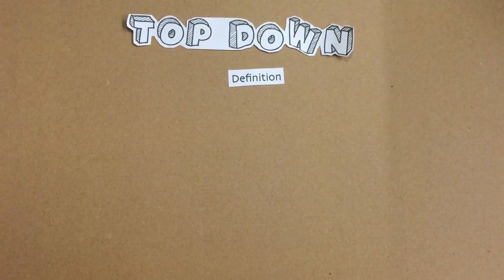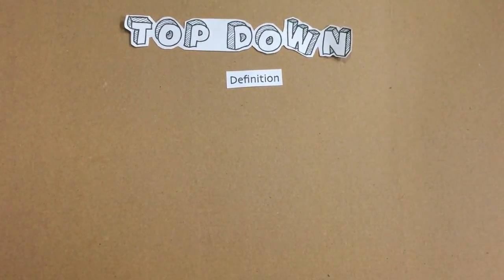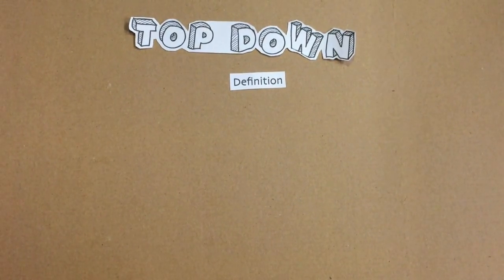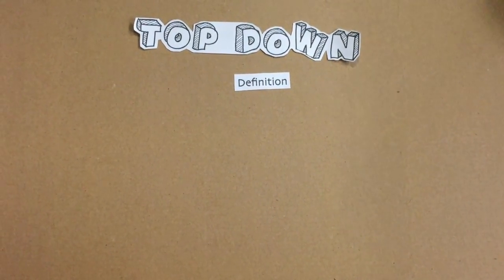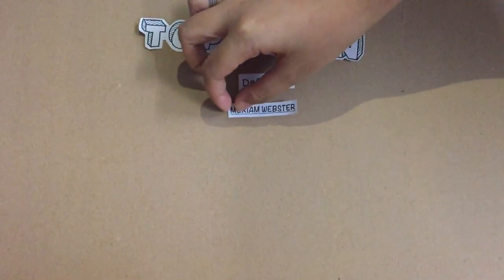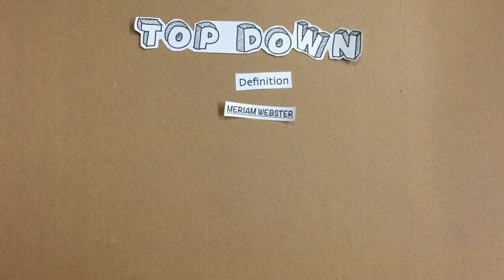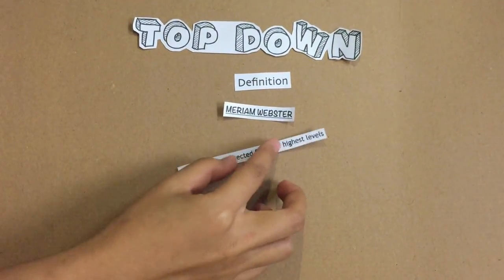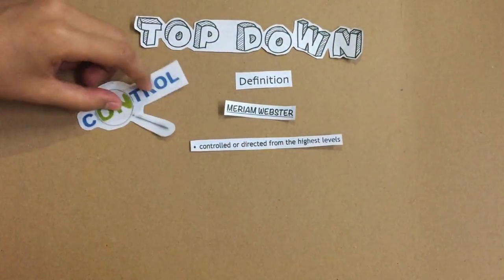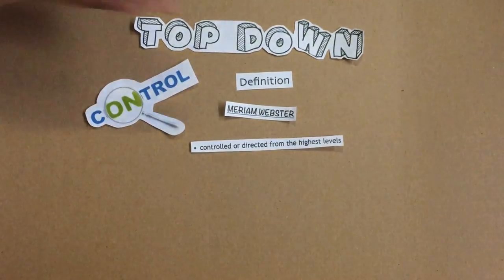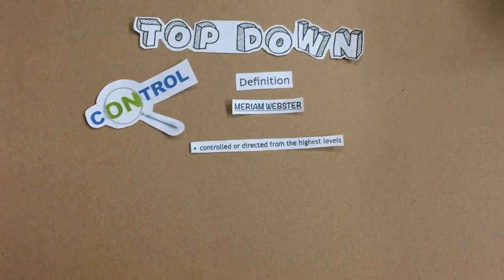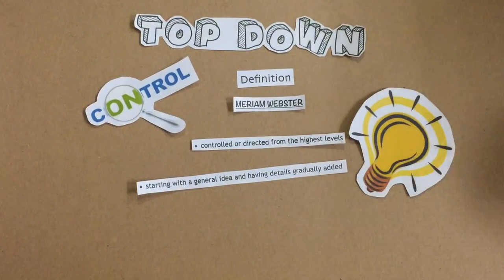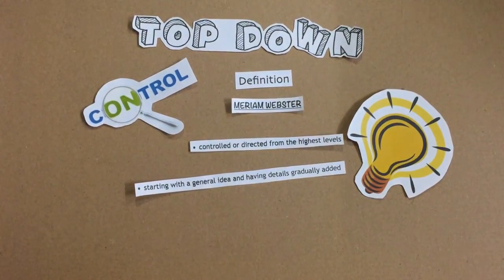First, let's look at the top-down definition. What is top-down? We have two sources here. Firstly, according to Merriam-Webster, top-down is an approach where an idea or decision is controlled or directed from the highest levels. It starts with a general idea and having details gradually added as it goes down the hierarchy.